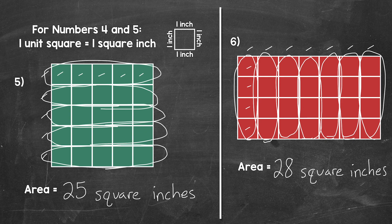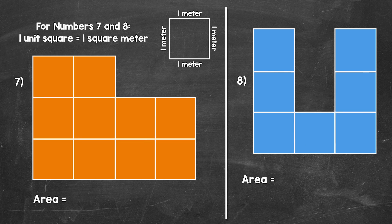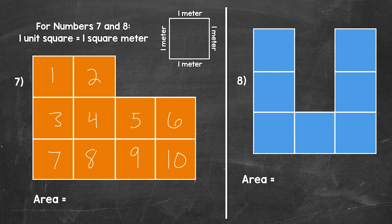Let's move on to numbers seven and eight — our last two examples. We have a couple of compound shapes here, so shapes that are made from a combination of basic shapes. For example, these compound shapes are made up of rectangles. We still find area using unit squares, and for numbers seven and eight, each unit square is a square meter. Each side measures one meter in length. So let's cover these shapes with unit squares, which each have an area of one square meter. Let's start with number seven: one, two, three, four, five, six, seven, eight, nine, ten. So the area of this shape is 10 square meters.